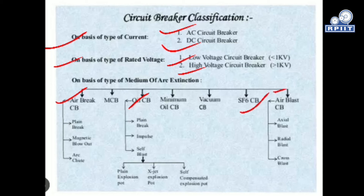For air break circuit breakers, there are three sub-categories: plain break, magnetic blowout, and arc quenching medium. Also, there is the MCB — miniature circuit breaker — which can use either an air or oil medium.